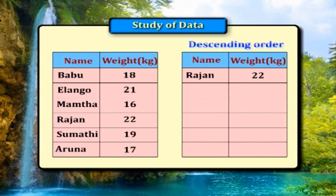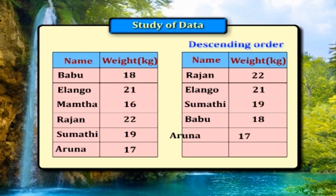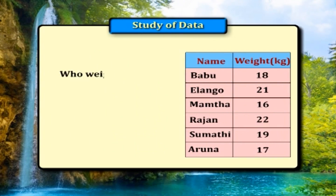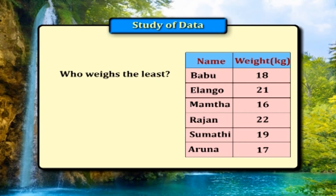Rajan — 22 kg. Ilango — 21 kg. Sumati — 19 kg. Babu — 18 kg. Aruna — 17 kg. Mamta — 16 kg. Among Ravi's friends, who weighs the most? Rajan weighs the most. Who weighs the least? Mamta weighs the least.